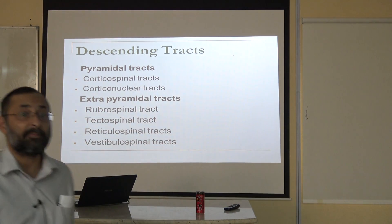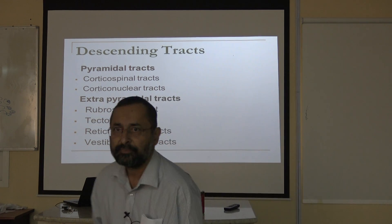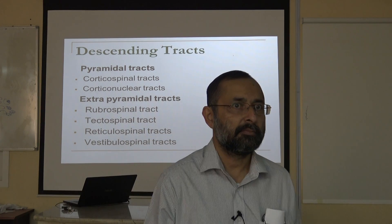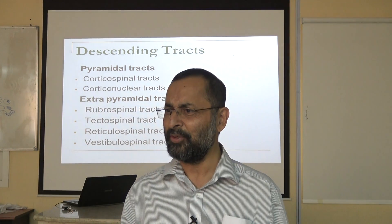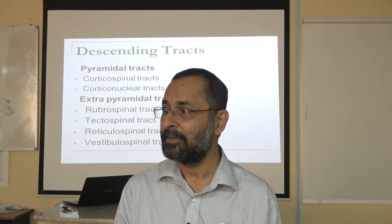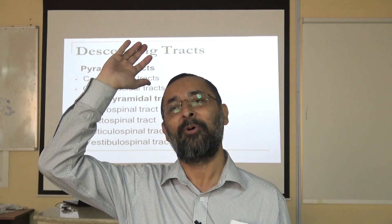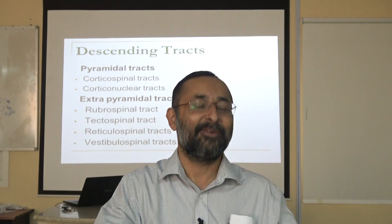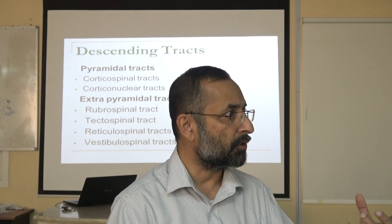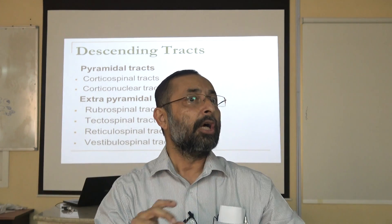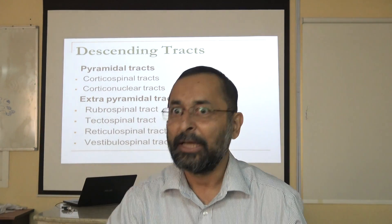Now look at the extrapyramidal tracts quickly. Rubrospinal — what does rubro mean? Think of the classical signs of inflammation: rubro, tumour, calor, and dolor — meaning red, swelling, hot, and pain. So rubro means red. What is red in the brain stem? The red nucleus. So the rubrospinal tract starts from the red nucleus and goes to the spinal cord.